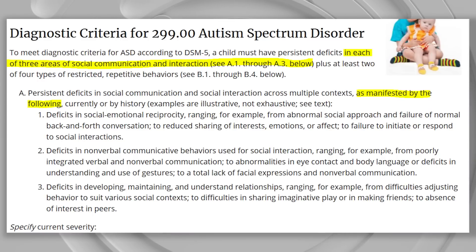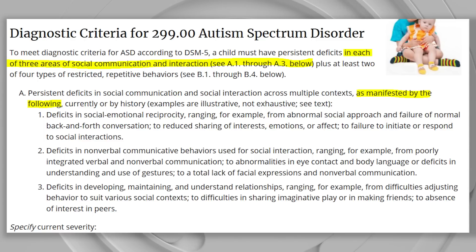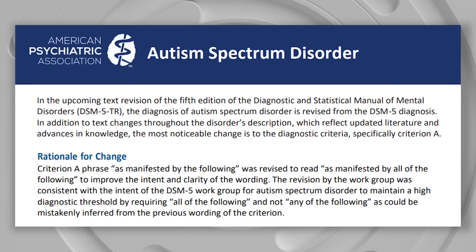I wanted to go check what it said initially. They haven't updated the particular wording on the CDC's website yet. So this is what it used to say: to meet diagnostic criteria for ASD according to DSM-5, a child must have persistent deficits in each of three areas of social communication and interaction, plus at least two of the four types of restricted repetitive behaviors — 'as manifested by the following, currently or by history.' They must have it in each of the three areas: A1, A2, and A3. There's nothing there that would have implied you could skip any of the subsets, but they were very concerned about it, so they tweaked it to add 'all of the following' just to make sure the standard was clear enough — which was kind of a minor change.